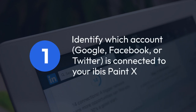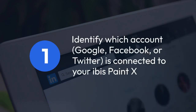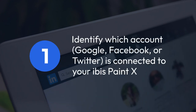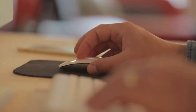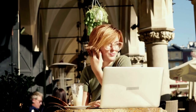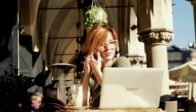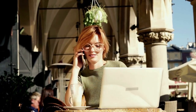Step 1: First, identify which account — Google, Facebook, or Twitter — is connected to your IBIS PaintX. You can usually find this information in the app's settings, often under a section like Account or Profile.